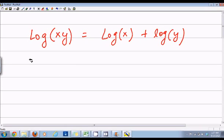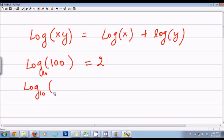So if we say log of 100, we know that log of 100 base 10 is equal to 2. Now I can also write this as log of 10 multiply by 10. So I can write 100 as 10 multiply by 10, and in this case if I use this property then I will say log of 10 plus log of 10.